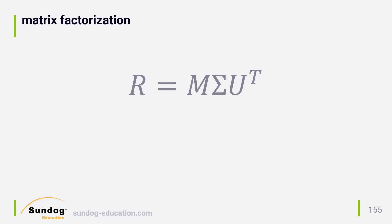You could reconstruct R all at once by multiplying these factors together and get ratings for every combination of users and items. Once you have these factors, you can also predict a rating for a specific user and item by taking the dot product of the associated row in M for the user and the associated column in UT for the item. That's just how matrix multiplication works.